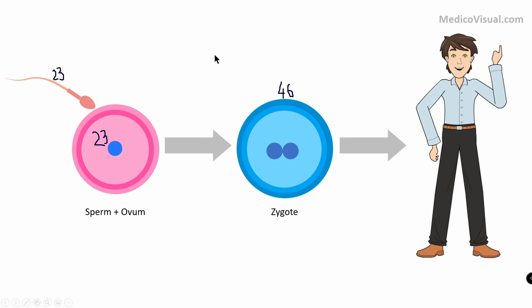The chromosome number remains the same from zygote onward — that is 46. The cell division that leads to formation of cells with the same number of chromosomes is called mitosis. The cell division that leads to formation of sperm and ovum is called meiosis, and in meiosis the chromosome number is decreased.